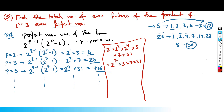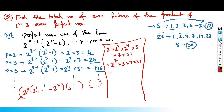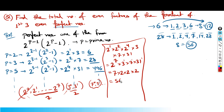From 2^7 we have 8 terms in the bracket. To get even factors, I should not pick 2^0 (which equals 1), because 1 multiplied by any odd number stays odd. So from 2's bracket I can pick 7 terms, from 3's bracket 2 terms, from 7's bracket 2 terms, and from 31's bracket 2 terms: 7 × 2 × 2 × 2 = 56.